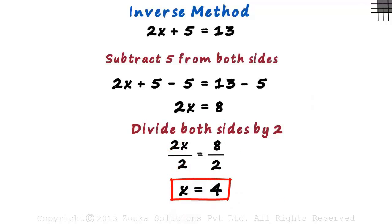This tells us that if you put 4 in place of x here, you will get 13. Let's review this method quickly. Our aim was to have only the variable on the left-hand side. So we first eliminated 5 by subtracting 5 from both sides, and then we eliminated 2 by dividing both sides by 2.